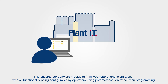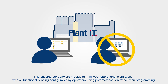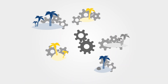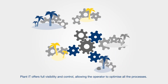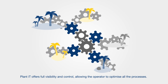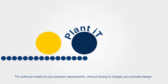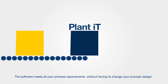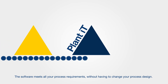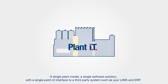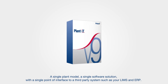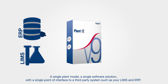This ensures our software moulds to fit all your operational plant areas, with all functionality being configurable by operators using parameterization rather than programming. Plant IT offers full visibility and control, allowing the operator to optimize all the processes. The software meets all your process requirements without having to change your process design. A single plant model, a single software solution, with a single point of interface to a third party system, such as your LIMS and ERP.